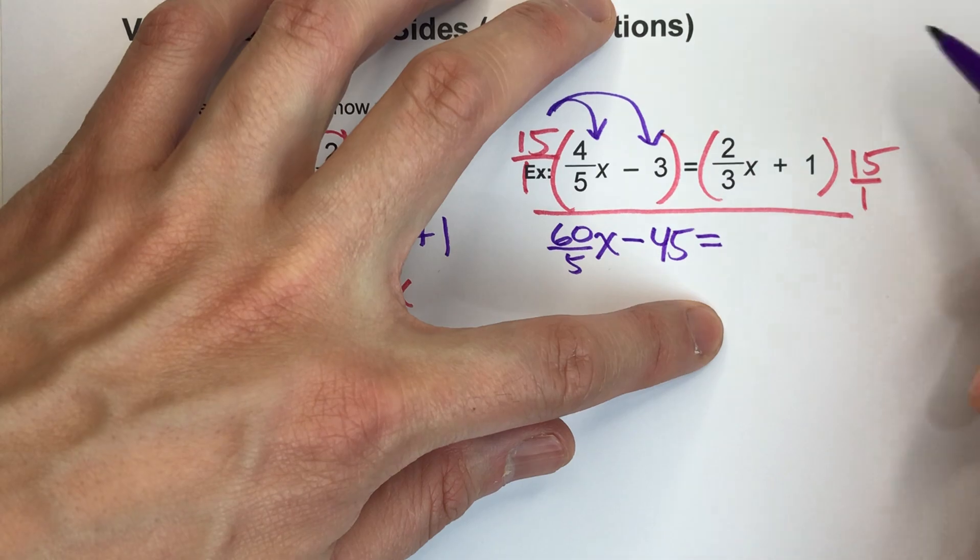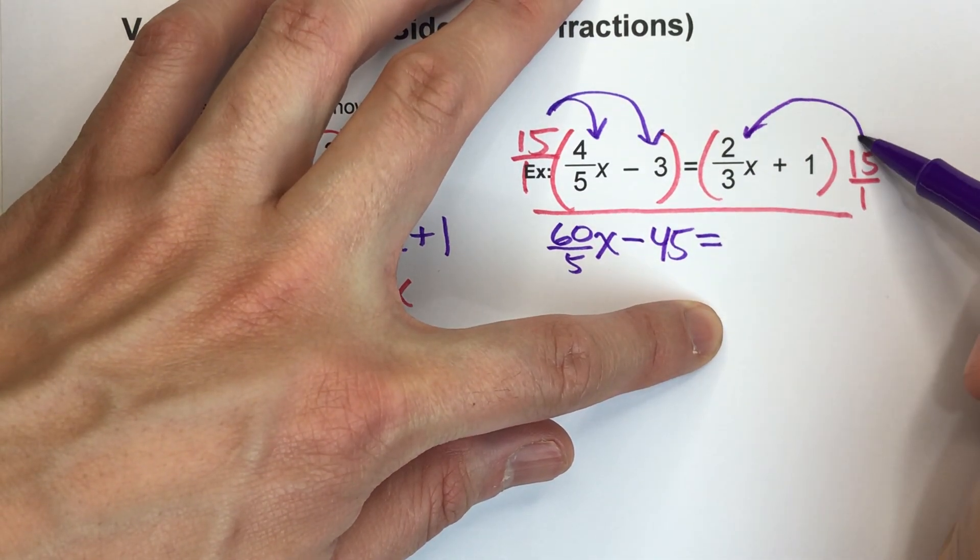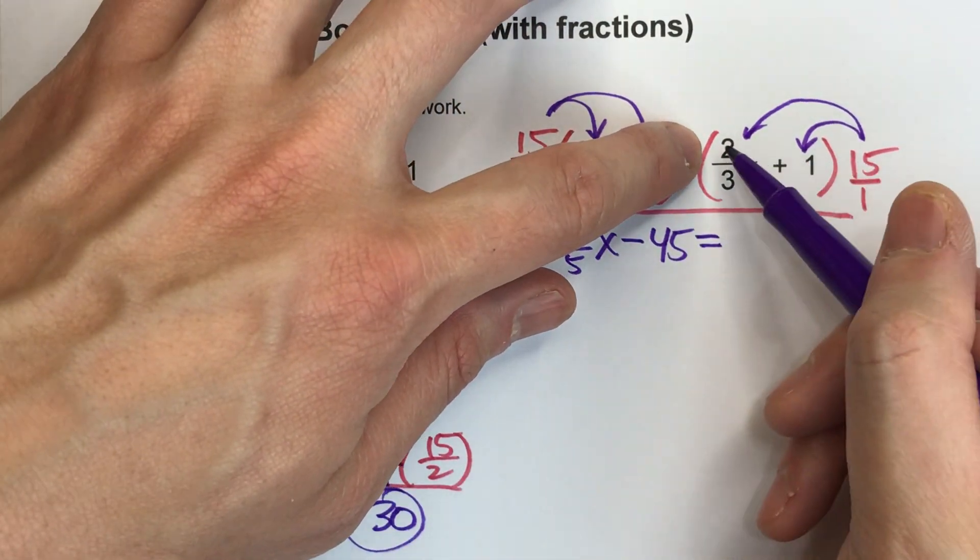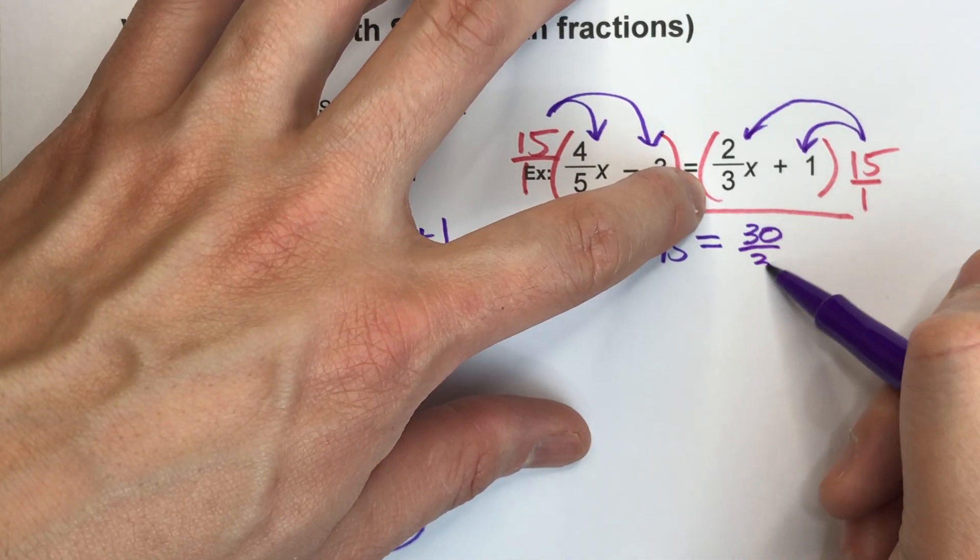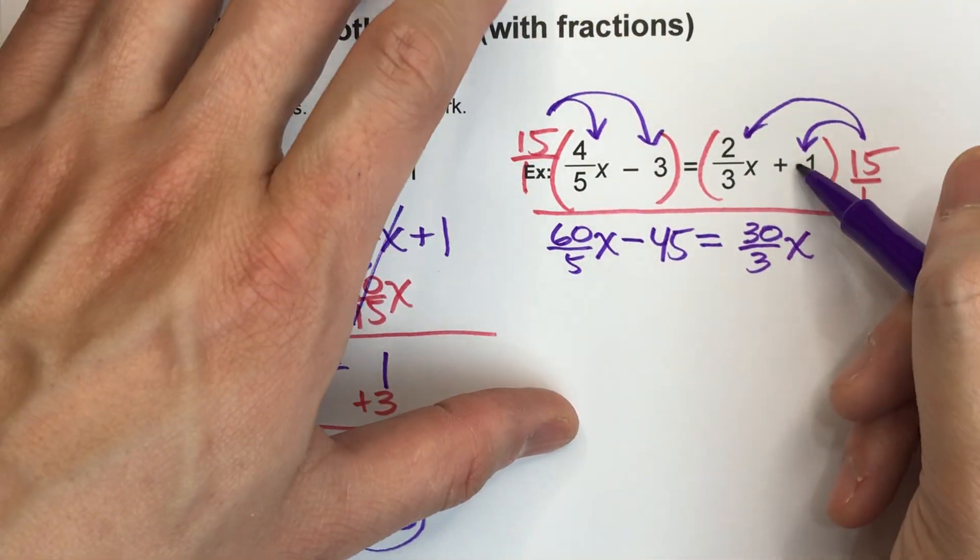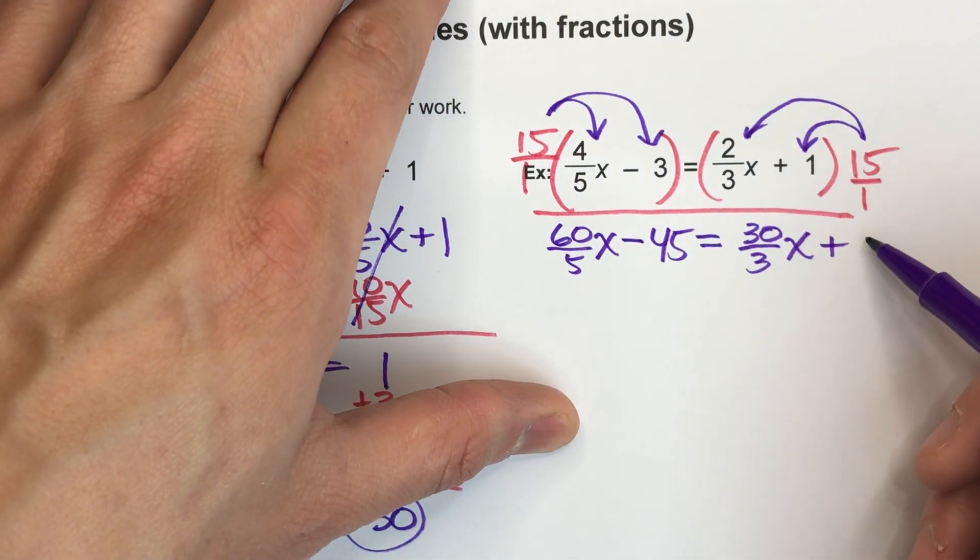Now on the other side, I have to multiply everything over here by 15. 15 times 2 is 30, 3 times 1 is 3, x. Plus, 1 times 15 is 15.